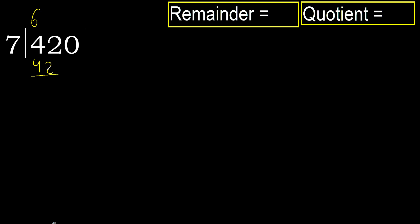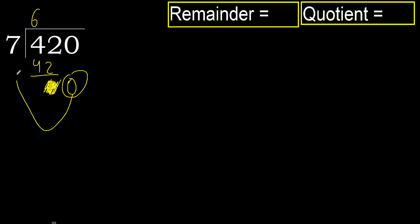42 minus 42 is 0. Next, eliminate 0 on this side. 0 is less, therefore next.